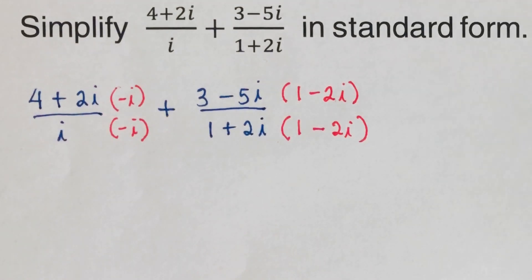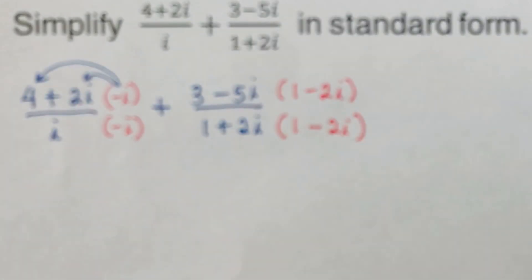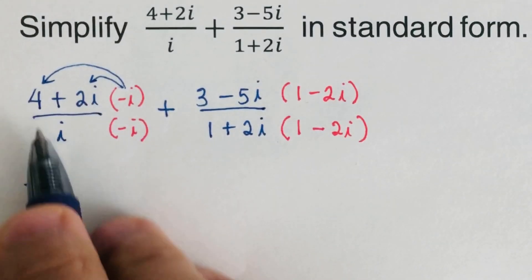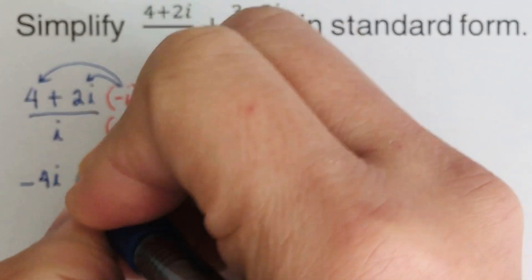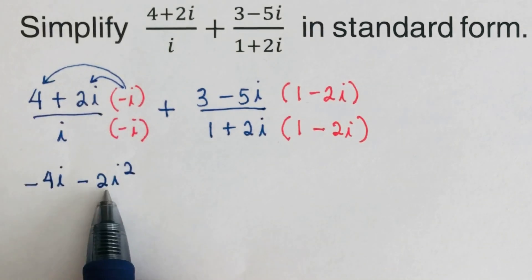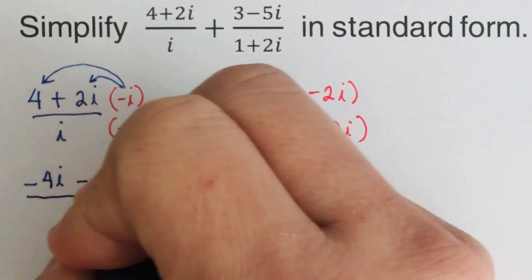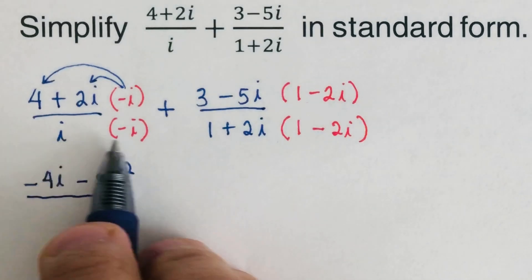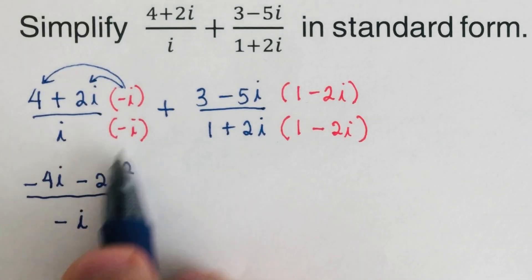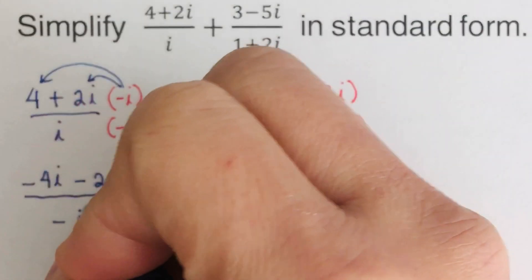Since the first fraction has one term in the denominator, we distribute negative i to each term in the numerator. Negative i times 4 gives negative 4i, and 2i times negative i gives negative 2i squared — that goes in the numerator. For the denominator, i times negative i equals negative i squared.